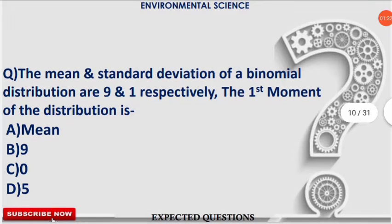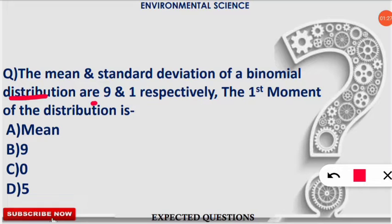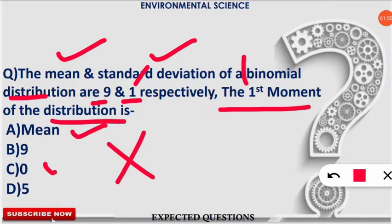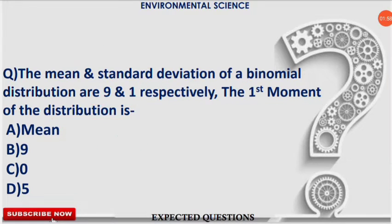The next question: the mean and standard deviation of a binomial distribution are 9 and 1 respectively. Find the first moment about the mean. Some students will select 'mean' as the answer, but that's wrong. Specifically in a binomial distribution, the first moment about the mean is always 0 — option C. No matter what values are given, the first moment about the mean in a binomial distribution is 0.